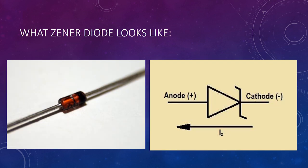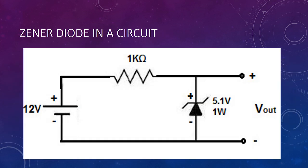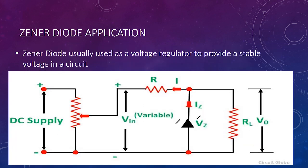Here you can see the image of the Zener diode and a picture of a Zener diode in a circuit. Zener diode is usually used as a voltage regulator to provide a stable voltage in a circuit.